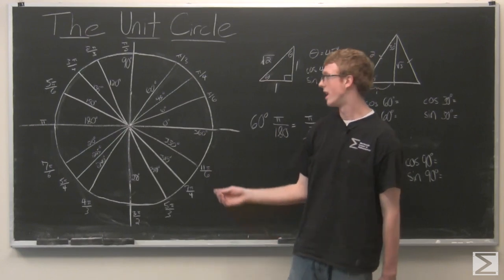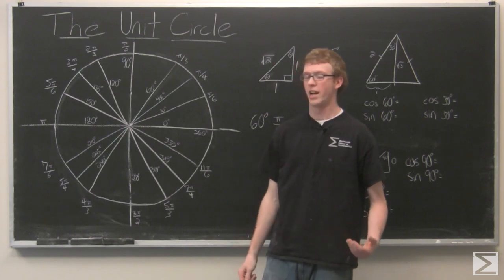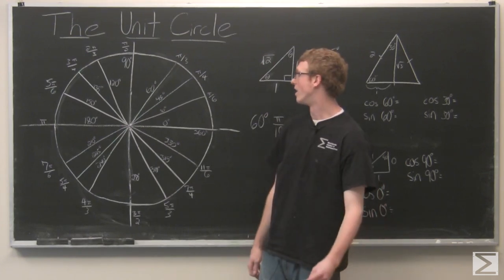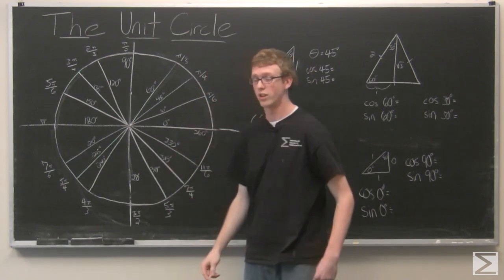And then we're also going to notice that this point and this point are going to be essentially the same up to their sign. So let's go ahead and find the points that these angles correspond to on the outer edge of the circle.